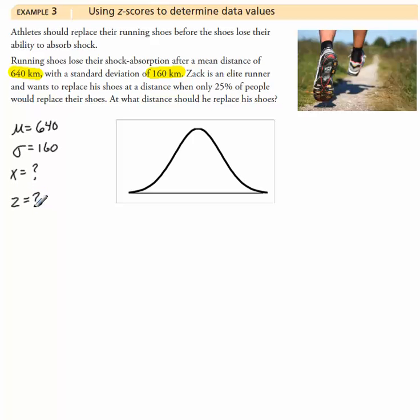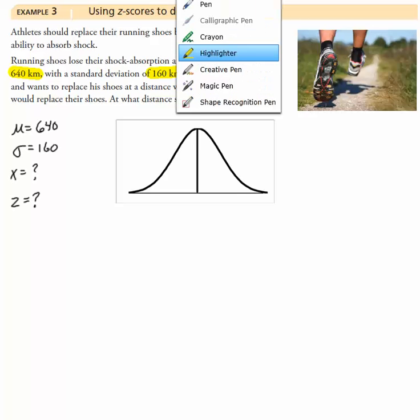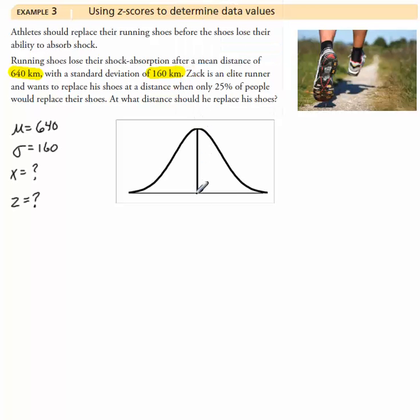So if you don't have a bell-shaped curve or a normal curve, sketch one. And that's how you should begin these problems, having a sketch of the curve. Remembering that your mean mu is in the middle. So we have 640 kilometers here.